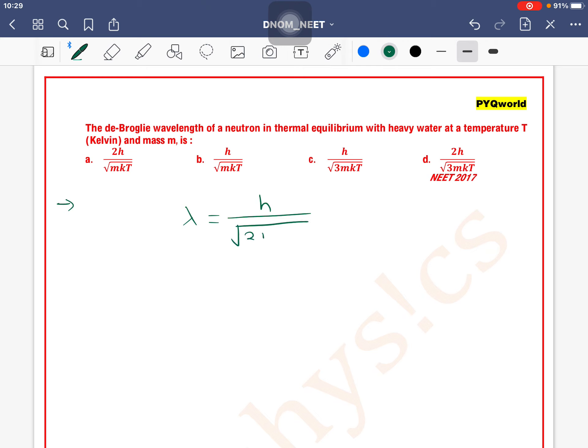And kinetic energy of a neutron in thermal equilibrium at temperature T can be written as 3/2 kT, where k is the Boltzmann constant, right?